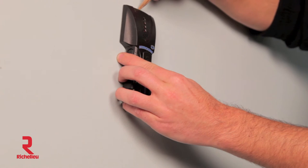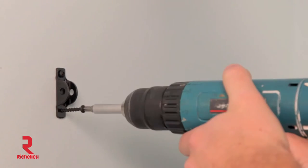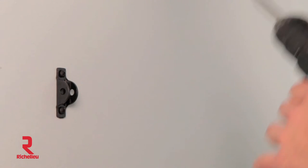Using a stud finder, find and mark the closest stud. Attach the second bracket to the wall using the self-drilling half inch stud screws.